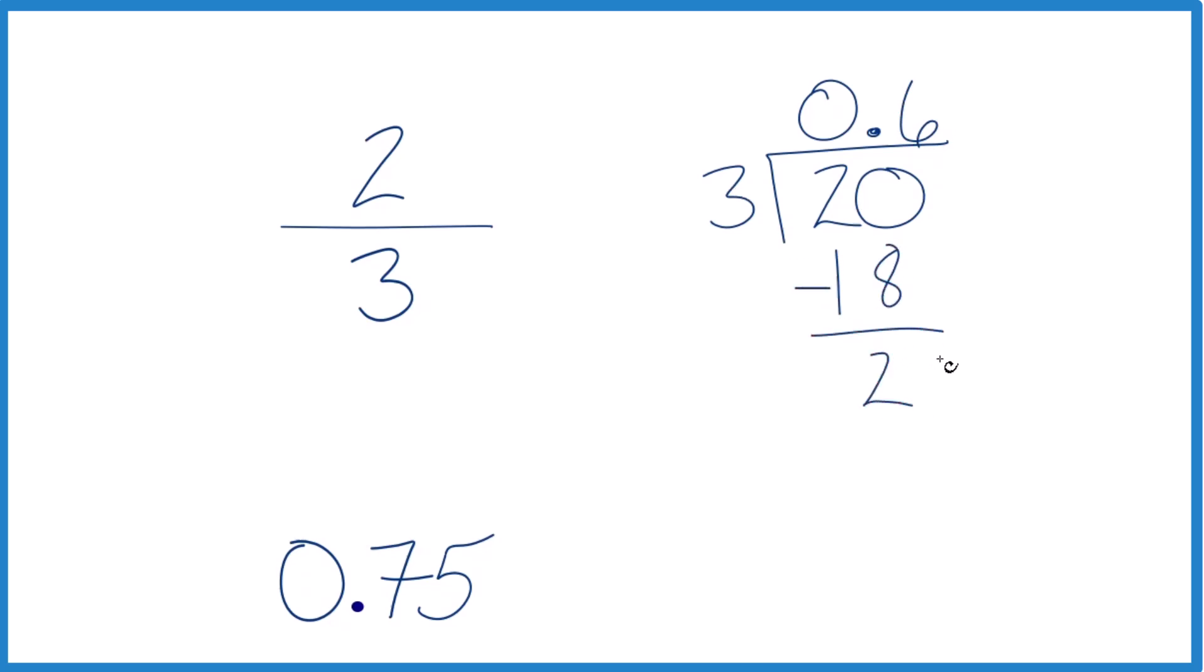It doesn't go into 2, call it 20, and we're going to move over 1. 6 times 3, that's 18. We subtract, we get 20. And you can see we'll just keep getting 6 repeating.